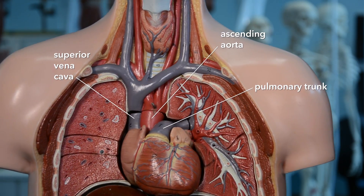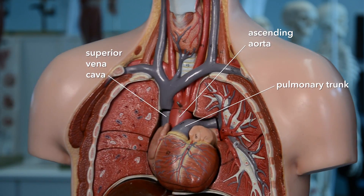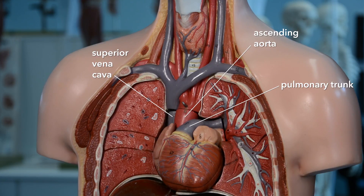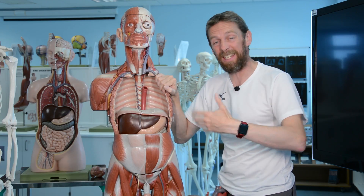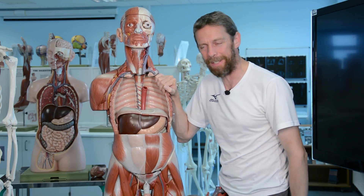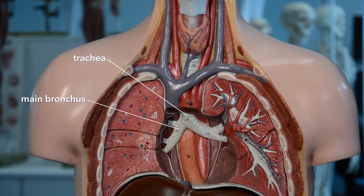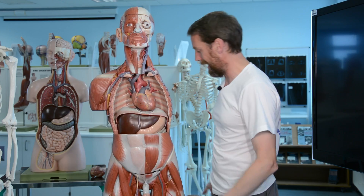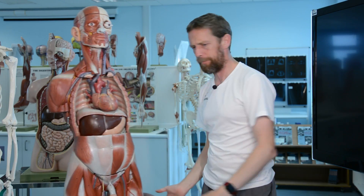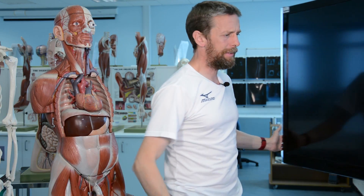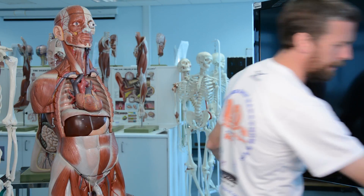Those big structures are what we're most interested in. If you like mnemonics, do a Google search — you'll find a bunch for these. But that's the transverse thoracic plane. Now, given what we've just looked at, how is this going to work if we look at a CT section?